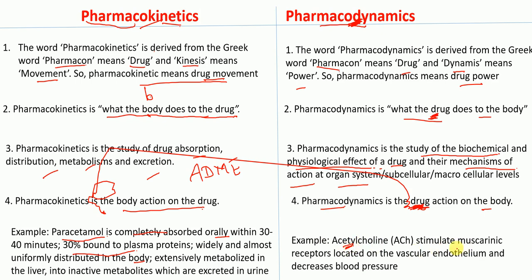For pharmacodynamics, for example, acetylcholine stimulates the muscarinic receptors located on the vascular endothelium and decreases blood pressure. The mechanism of action is acetylcholine stimulating muscarinic receptors, and the effect is the decrease in blood pressure. This is pharmacodynamics.